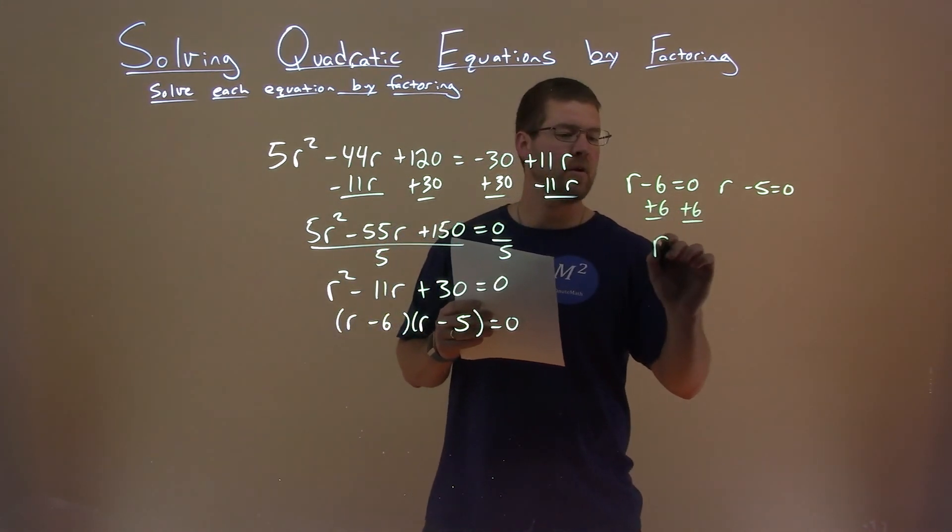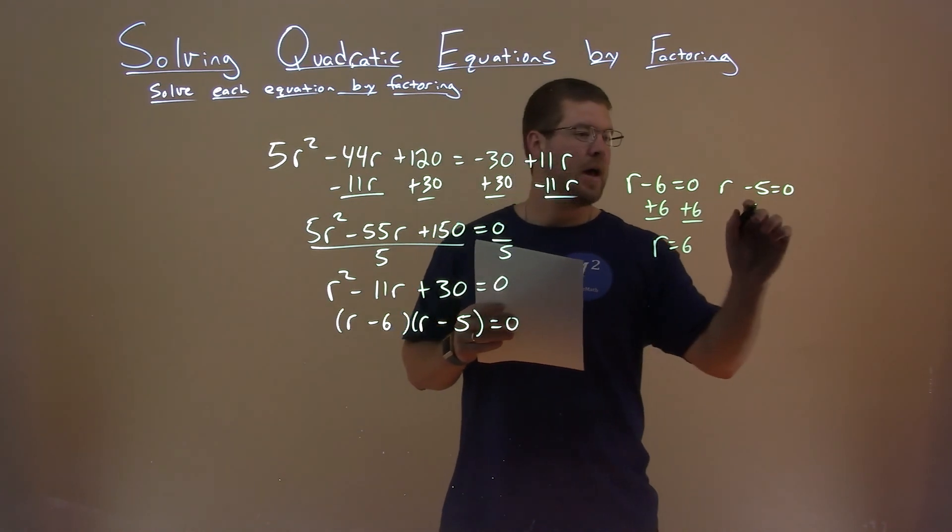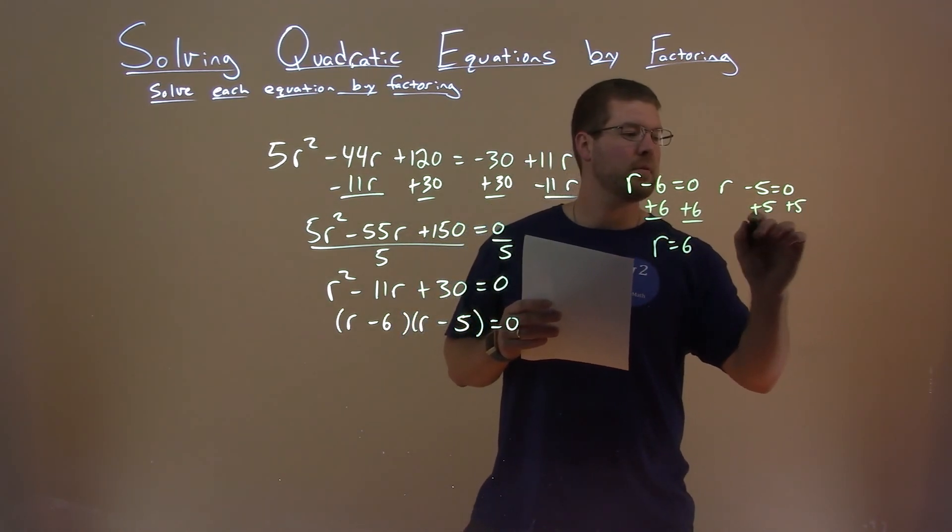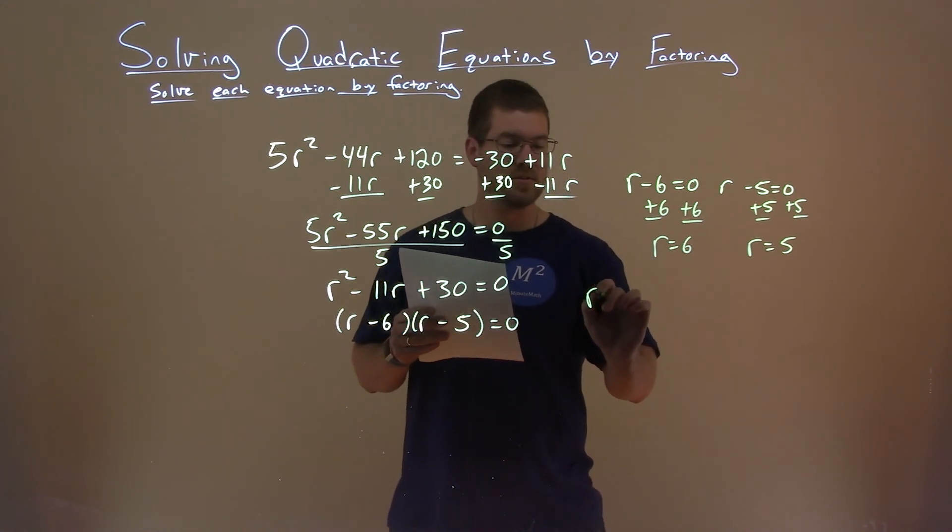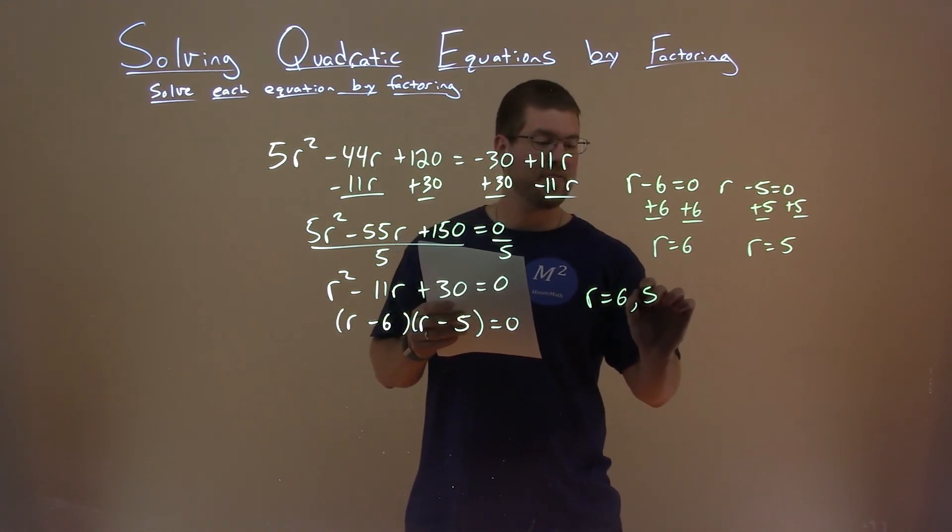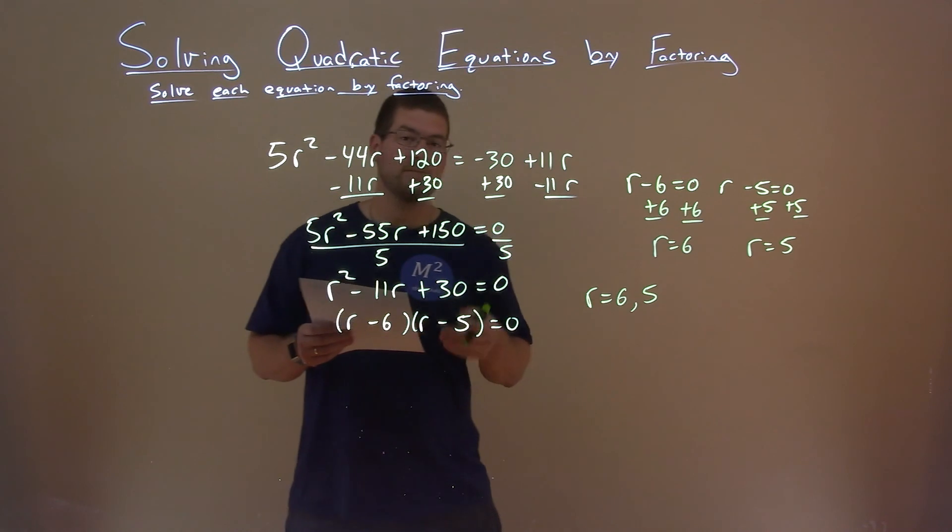Add 6 to both sides, and r equals positive 6. Add 5 to both sides, and r equals positive 5. And so my two answers are r equals 6 and 5, and that is my final answer.